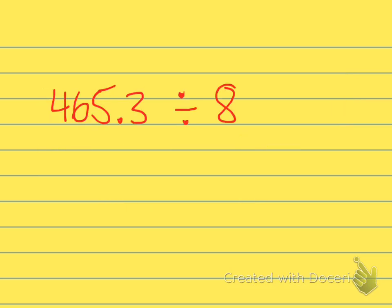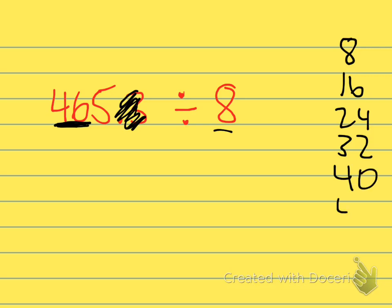Another example here. We have 465 and 3 tenths divided by 8. And if we're estimating, I'm not worried so much about that decimal. I look at my 8 and I think of a multiple of 8 that can be compatible with a number that is close to that 46. So if I think of my multiples of 8: 8, 16, 24, 32, 40, 48,